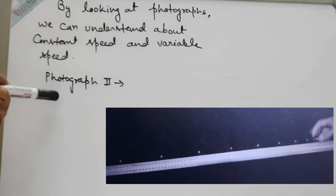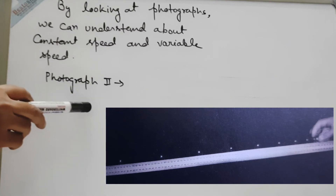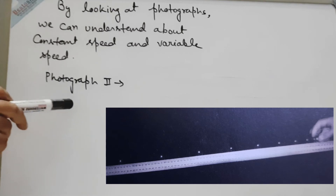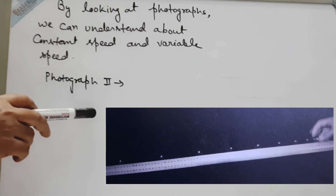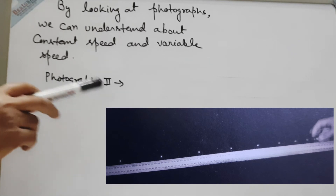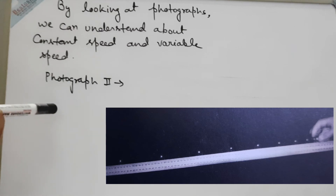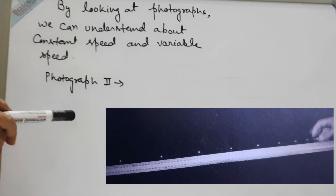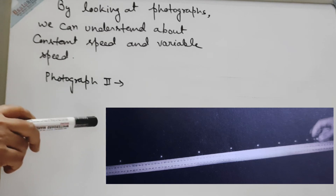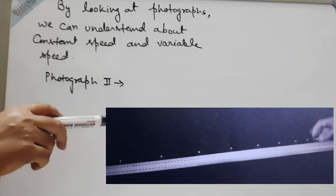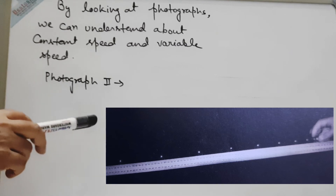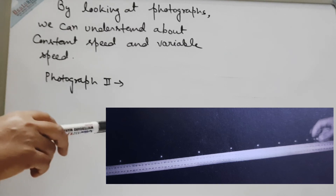Photograph 2 shows a steel ball bearing rolling down a slope. The images of the ball bearing get further apart as it runs down the slope, which shows that the ball bearing is speeding up. Equal spacing tells us that an object is moving at a steady speed, and increasing spacing tells us that it is speeding up.